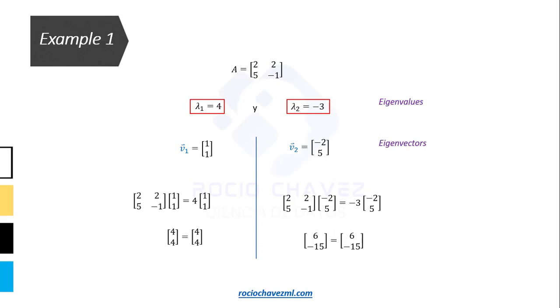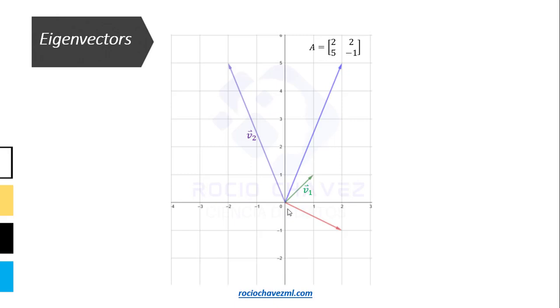Let's see all this information on the Cartesian plane. In linear algebra, all vectors start from the origin, so the elements of both the matrix and the eigenvectors start from the same point. Here we have the vectors corresponding to the elements contained in matrix A, which reach the coordinates 2, 5, and 2, minus 1. We also locate the eigenvectors, which, as we had seen, reach the coordinates 1, 1, and minus 2, 5.